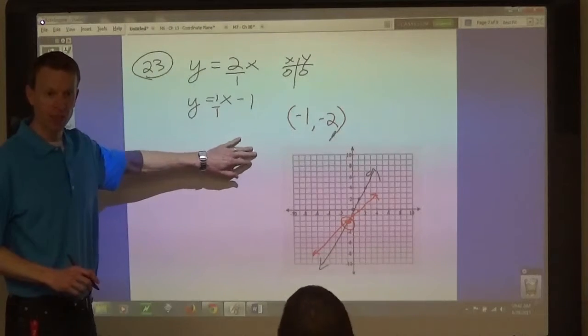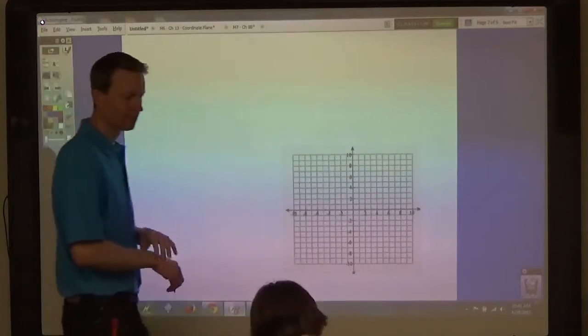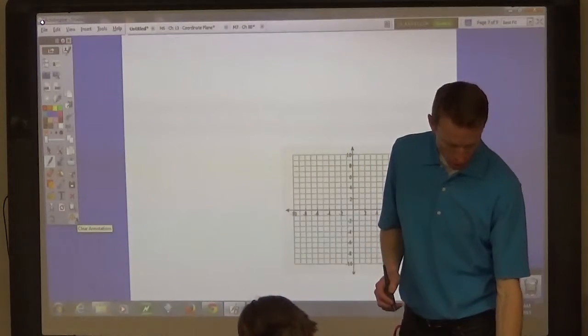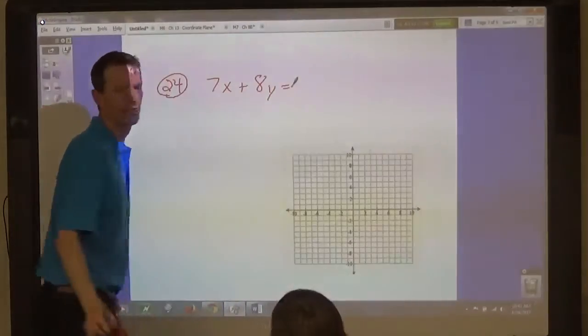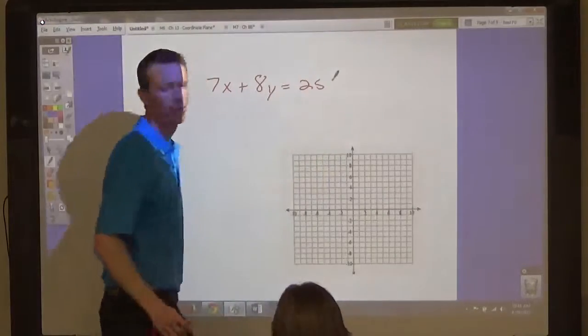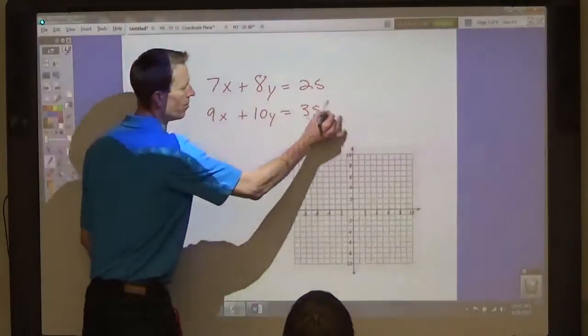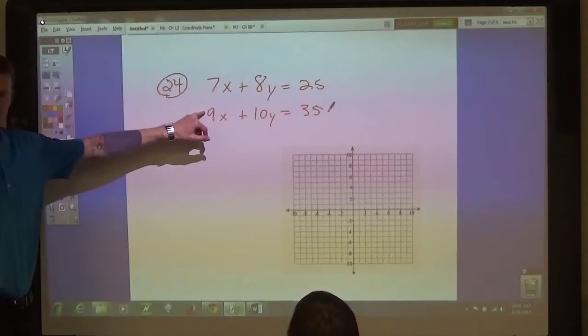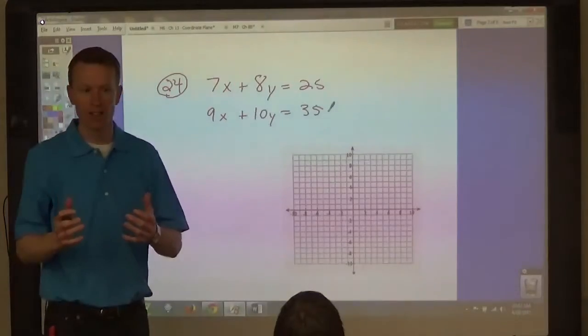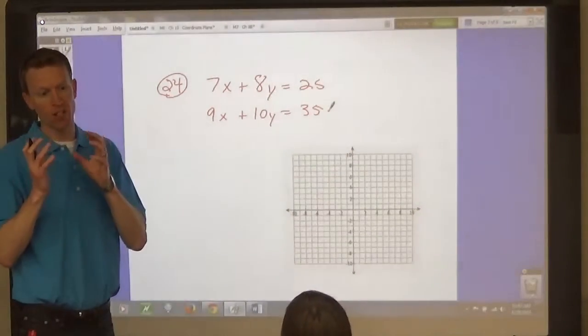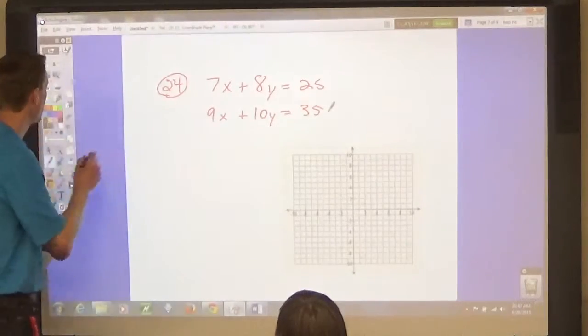Pay attention here. This is one of your assignments. Problem 24. Let's choose a method for this one. 7x plus 8y equals 25, and 9x plus 10y equals 35. Elimination? This one might work well for elimination because they're both in the same form. Do you remember what form this is called? Standard form, right. None of them are solved for y. So if one of them was solved for one of the variables, that's a good time to use the substitution method, because then you can substitute that expression. But let's use the elimination method on this one.